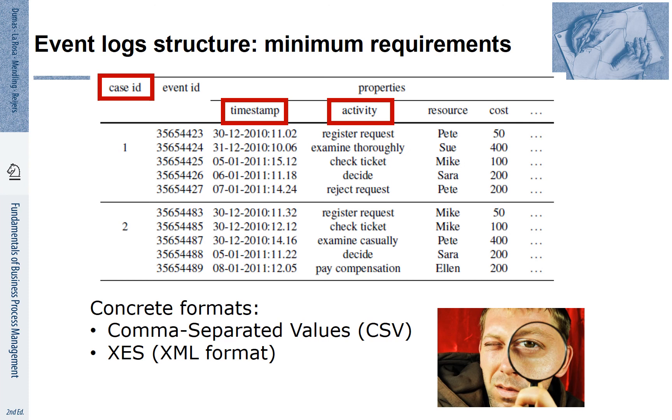If we look at the data here, we can see that case 1 unfolded differently than case 2. In case 1, we first registered the request, examined thoroughly, checked the ticket, decided, and rejected the request. While for case 2, we also registered the request, checked the ticket, examined casually, in this case decided and paid a compensation to the customer. Process mining is concerned with identifying the commonalities and the differences of these different paths of execution and representing them as a process model.